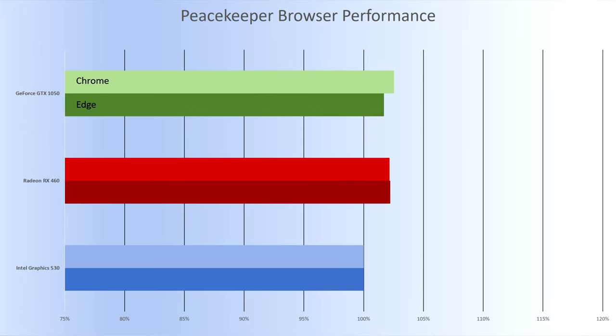Moving to Peacekeeper — an older benchmark reflecting the HTML4 era of browser performance — we're seeing less of a performance gain. In that era things were not as performance-intensive, and a faster card won't be heavily challenged by that level of graphics. Here we're seeing an increase of only 2% to 3%, with Chrome having a little more benefit over Edge.